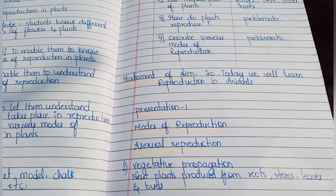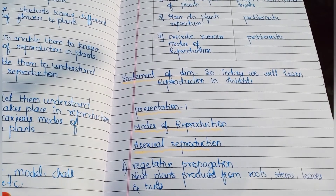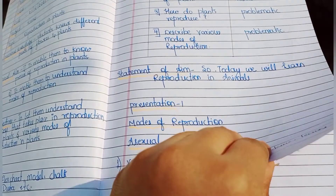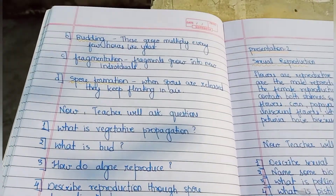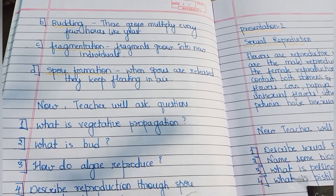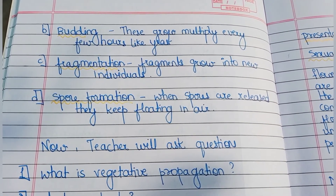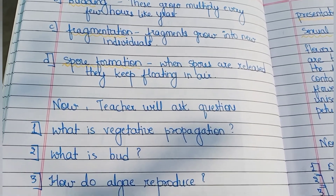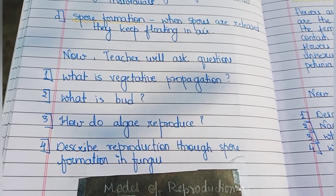Here you can see modes of reproduction — all the presentation content that I have mentioned here — and at the same time we have to teach the same thing to students. Here you can see the remaining part of Presentation One. You can add a few more points also; I haven't added much because the space was not there, but you can add more points.